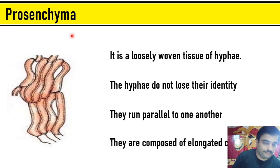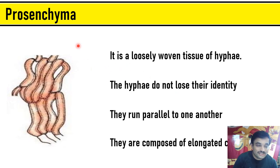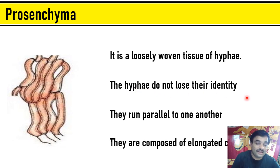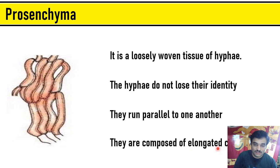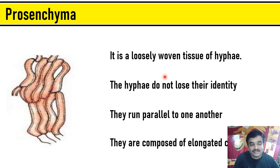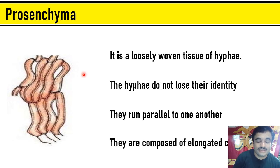One of them is prosenchyma, which is a loosely woven tissue of hyphae where the hyphae do not lose their identity. The hyphae run parallel to one another and are loosely woven, so we can identify a single hypha in a proper manner even though they are grouped together. These are usually composed of elongated cells. This is the characteristic feature of prosenchyma tissue seen in fungi. The term 'tissue' is used only for convenience — it is just an aggregation of cells where division of labor is not stringently followed as in true tissue-level organization.